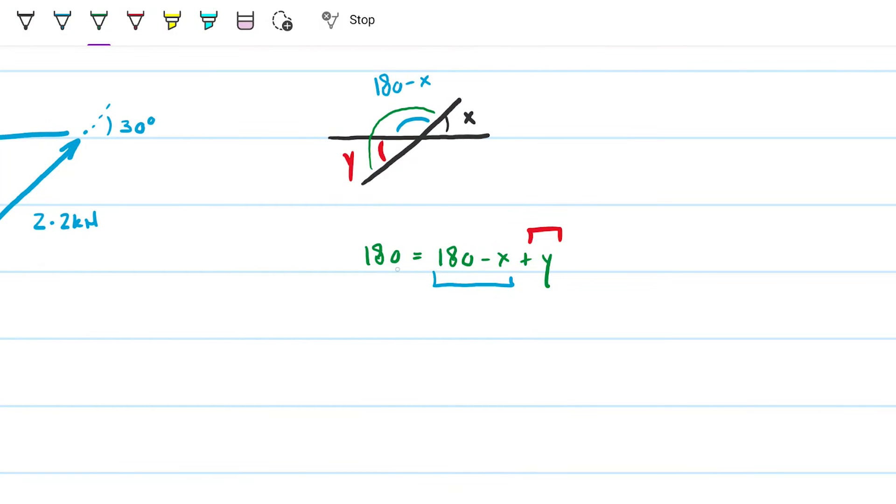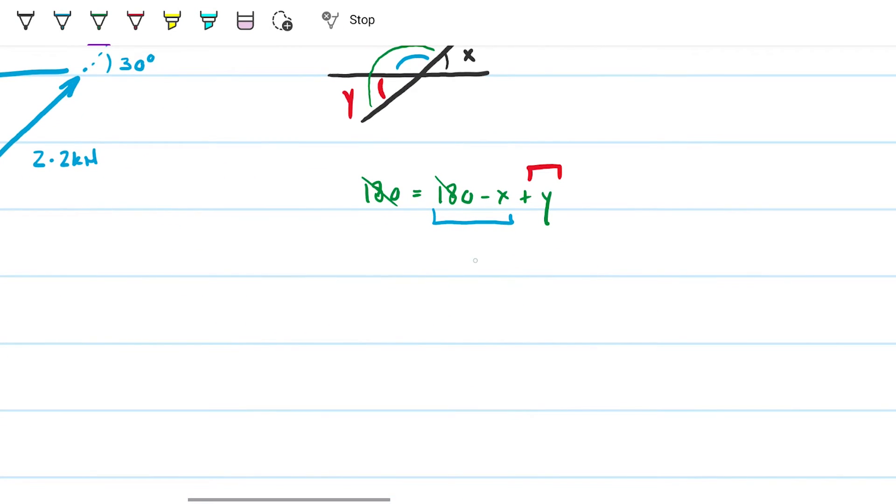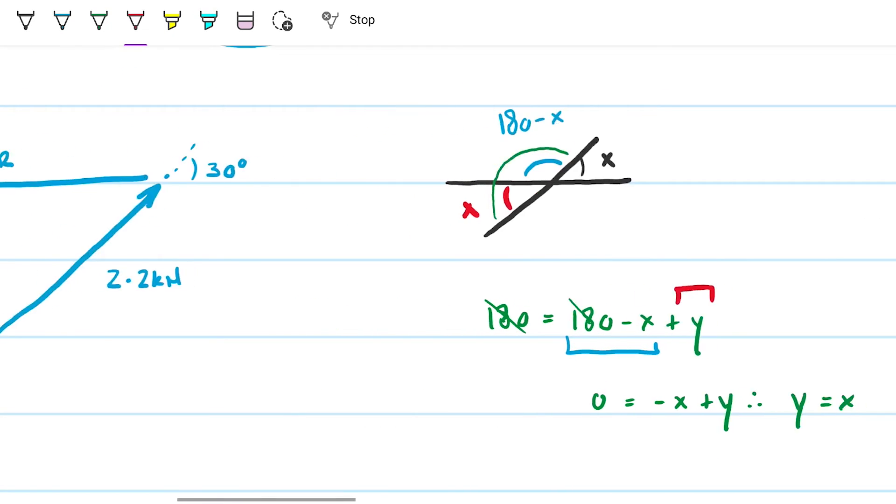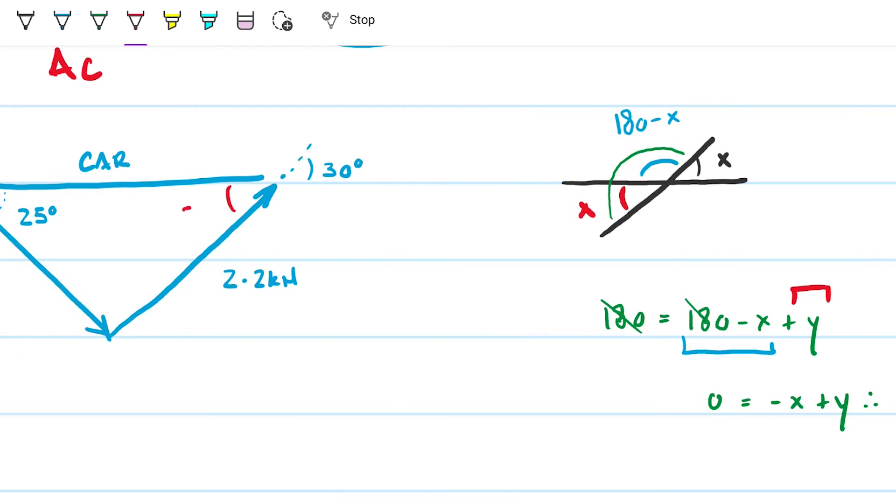So therefore, these guys go away, and you're left with zero equals minus x plus y, and therefore, x equals y, or y equals x, okay? So therefore, this is also x right here. So what does that mean? It means that this guy here has to be 30.